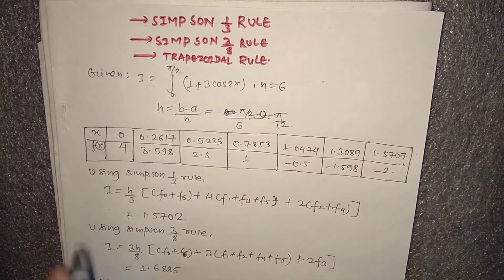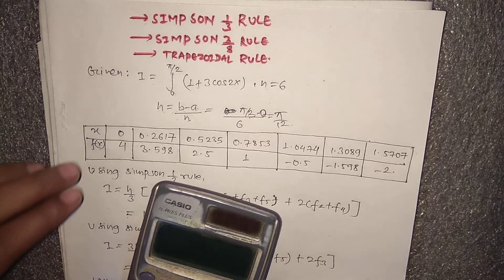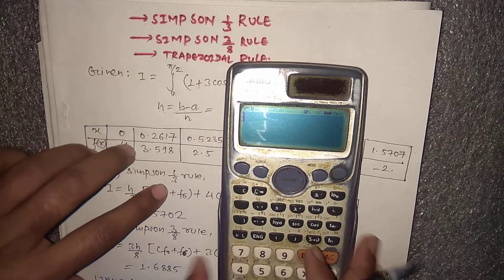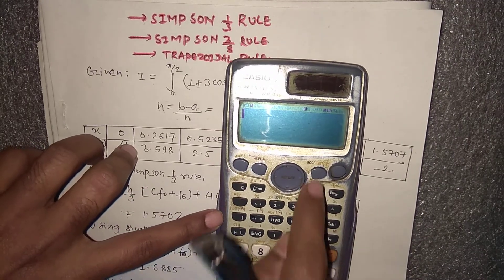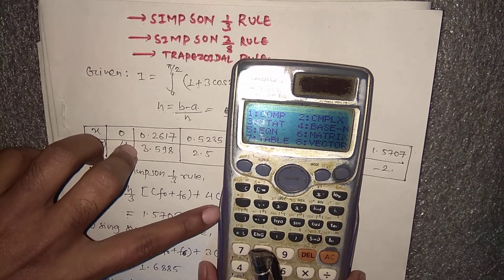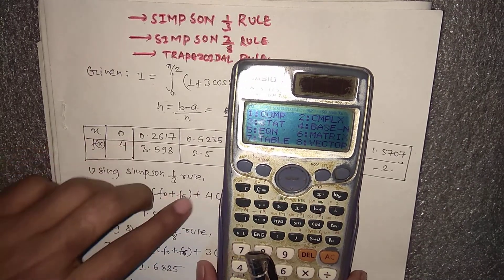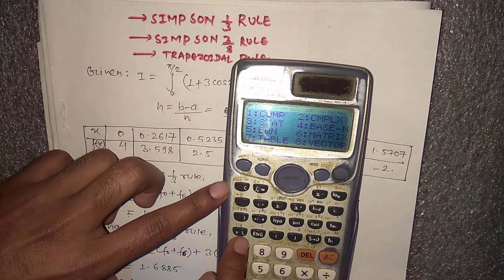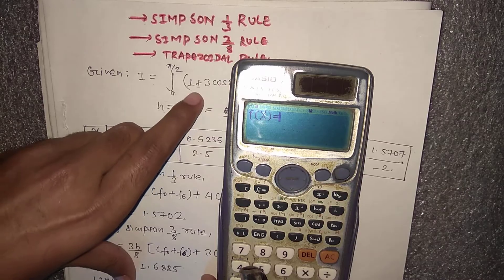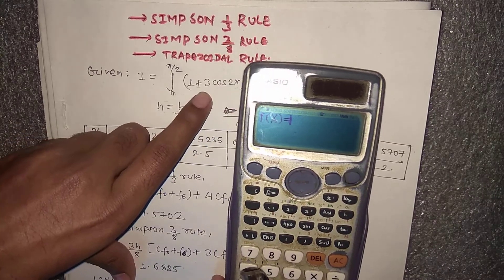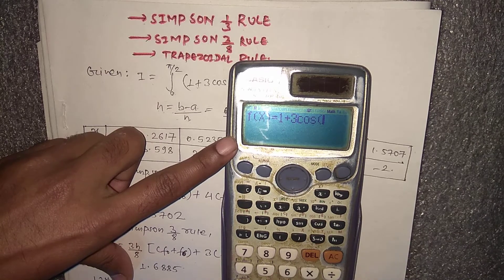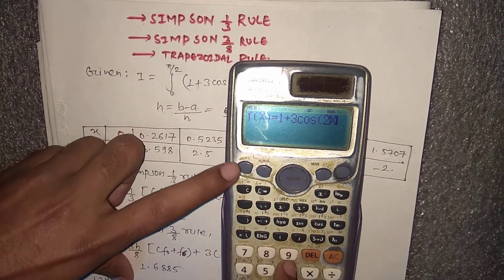Now I am going to show you how to solve this with the help of a calculator. Before starting, make sure your calculator is in the correct mode. Press Mode, then 7. We have the value f(x) = 1 + 3cos(2x), so enter f(x) = 1 + 3cos(2α·x).